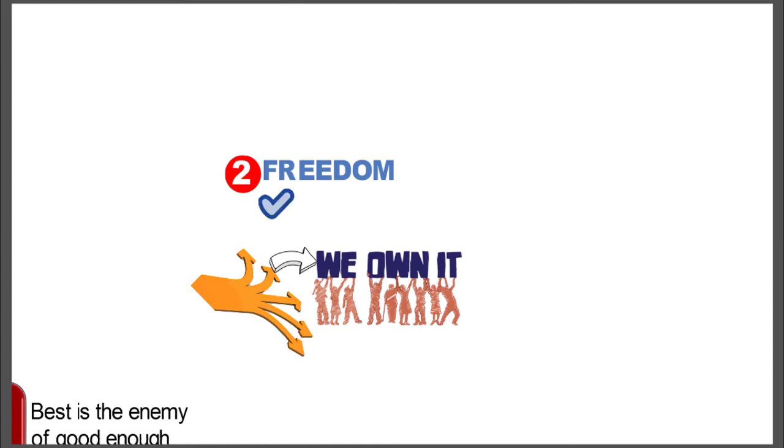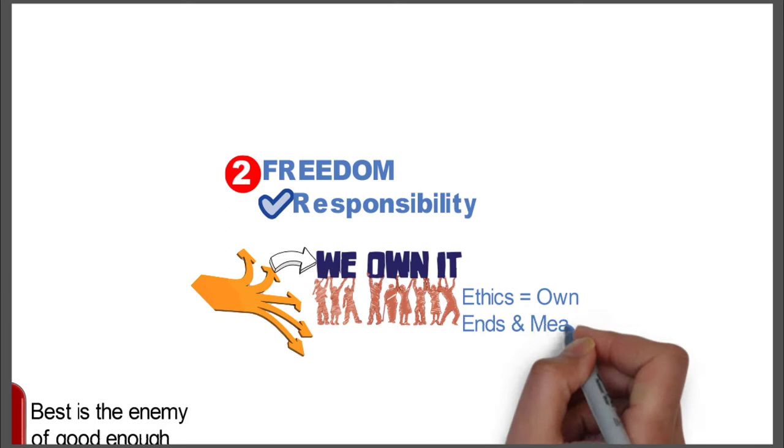Then she talks about freedom. What does being free mean? The main thing is that we make the choice, but then we own it. She really wants to focus on the fact that we have to take responsibility for the choice, that the ethics equals we own the ends and the means.